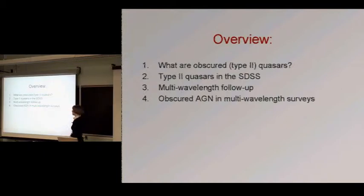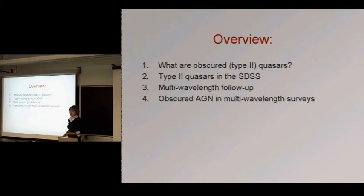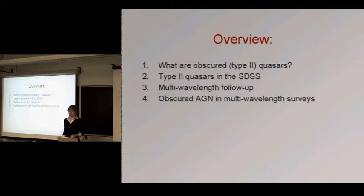I'll start by telling you what obscure type 2 quasars are — I'm going to use this term interchangeably — and I'm going to tell you why we think they're interesting and worth studying. Then I'll tell you about our work to look for type 2 quasars in the Sloan Digital Sky Survey data, about the multi-wavelength follow-up we've done, and then put that into the broader perspective of other searches for obscured AGN at various wavelengths.